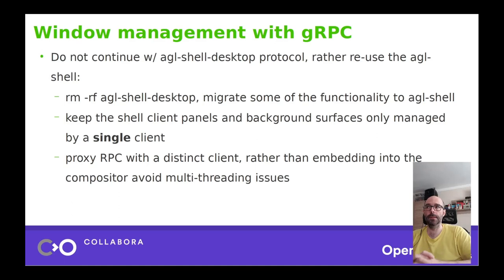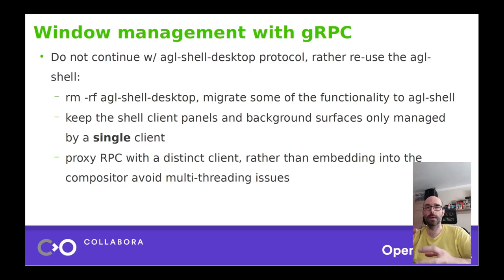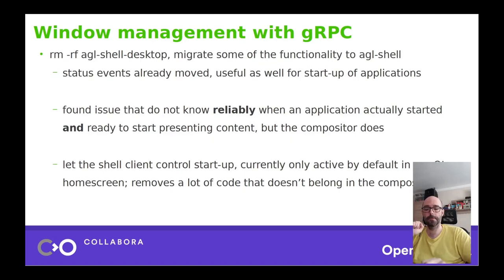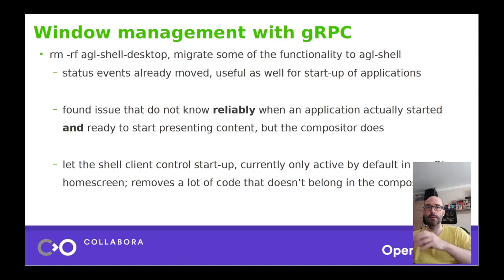So the steps for doing this are: migrate some functionality from AGL shell desktop to AGL shell, then get rid of AGL shell desktop. We still need to keep the panels and background surfaces managed by a single client, so we shouldn't allow multiple clients to do that. Rather than embedding this gRPC server inside the compositor and dealing with multi-threading issues, we need to proxy this RPC using a helper client. Migrating functionality from AGL shell desktop to AGL shell has already been done with version 3 of the AGL shell protocol, which is already in master.